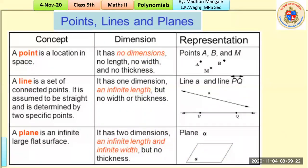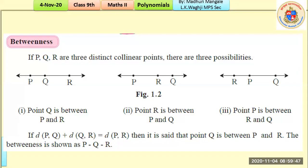Next we saw a plane, which is an infinitely large flat surface. It has two dimensions but no thickness — infinite length and infinite width. Then we also saw the concept of betweenness: if there are three collinear points, a point between two others is represented using the formula — distance(P,Q) plus distance(Q,R) equals distance(P,R).